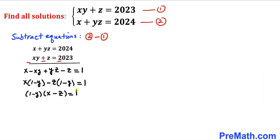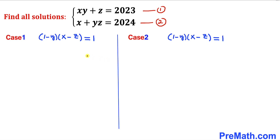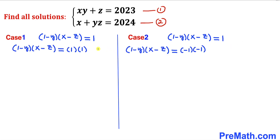We have two factors on the left-hand side, so 1 on the right can be written as 1 times 1 or negative 1 times negative 1. We will investigate two cases: Case 1 where 1 equals 1 times 1, and Case 2 where 1 equals negative 1 times negative 1.